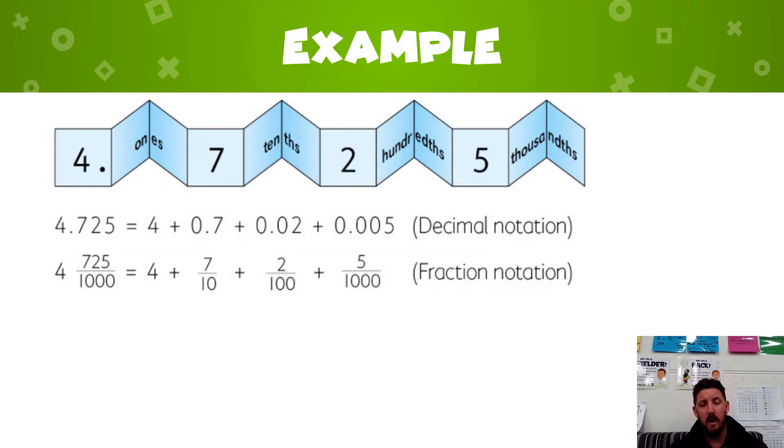Here is a prime example of how we expand a number with our expanded notation. In this case we have 4.725, and what is that actually made up of? It's made up of 4 ones, 7 tenths, 2 hundredths, and 5 thousandths.